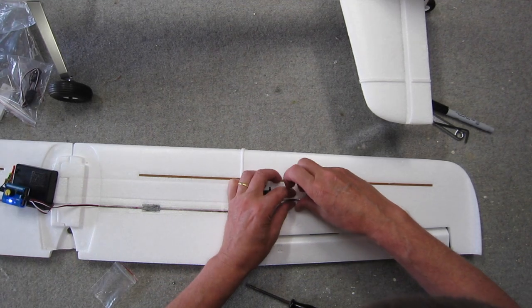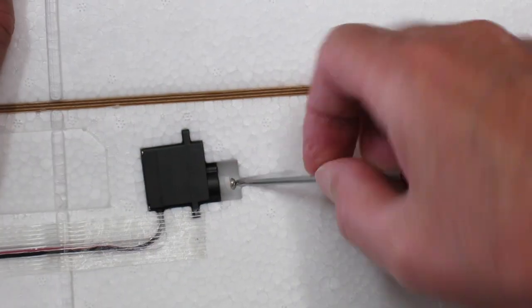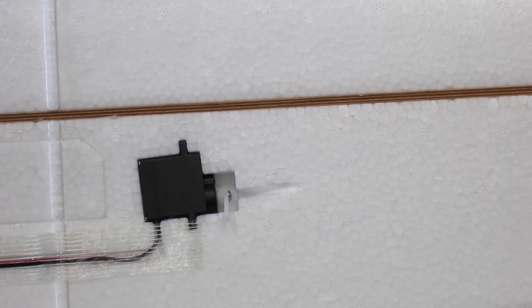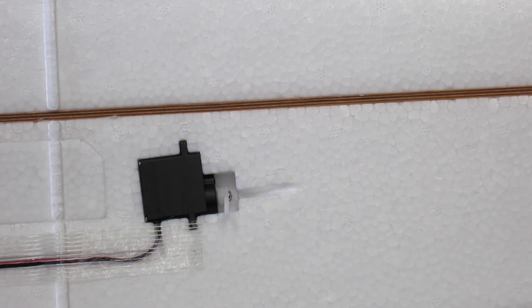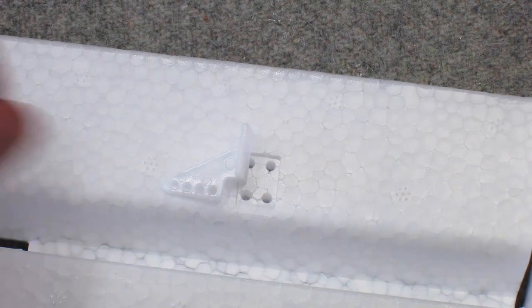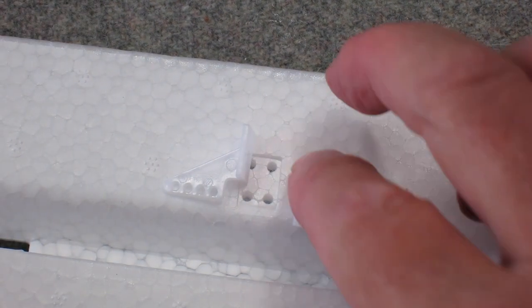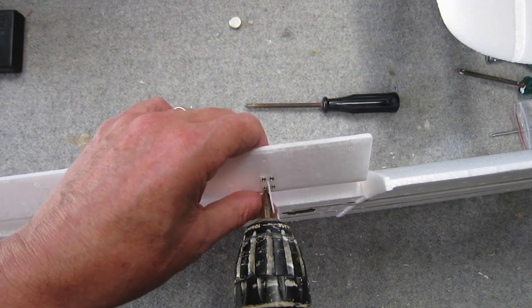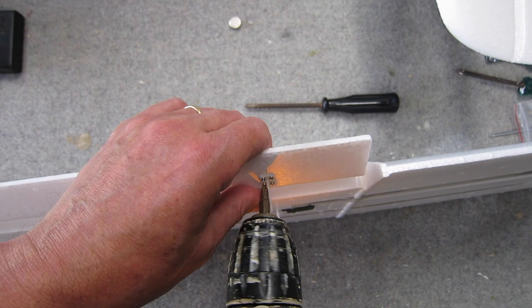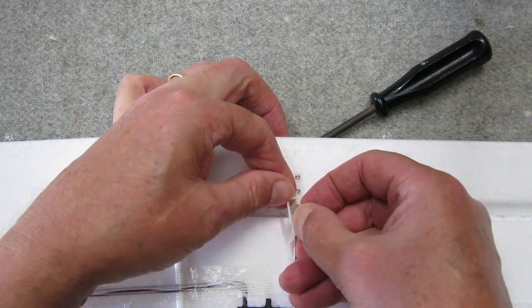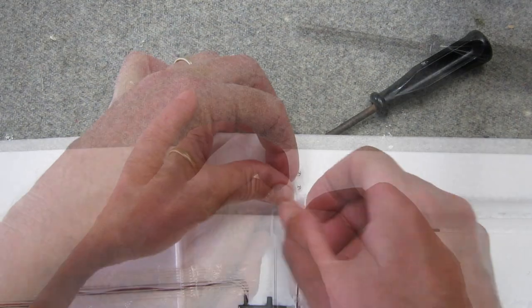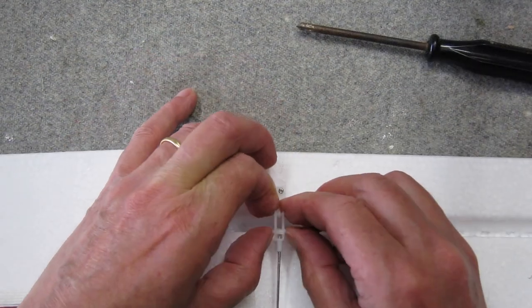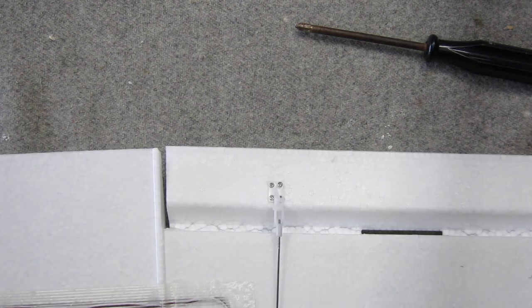Now for the ailerons, I'm fitting the servo arms onto the servos. Using a servo tester, we need to make sure they're centered up before we fit the pushrod. Fit the control horns, same way as with the elevator. I'm getting lazy and using a power driver. Attach the pushrods and the safety band and give it a wiggle with the servo tester.